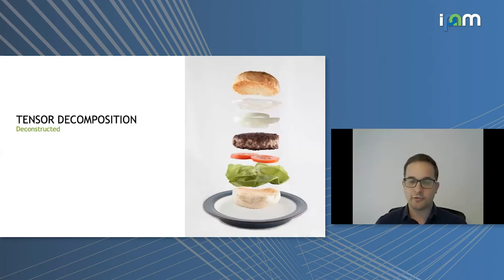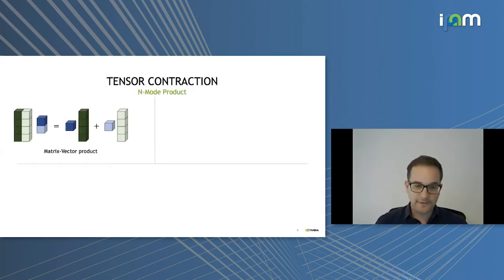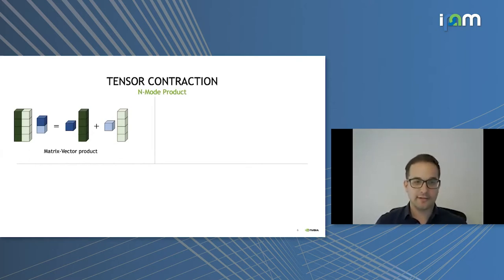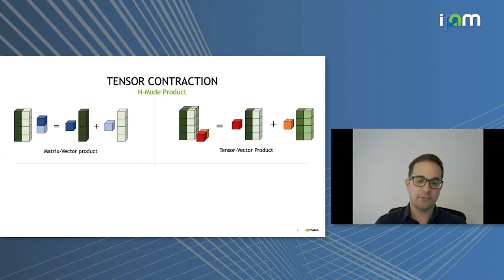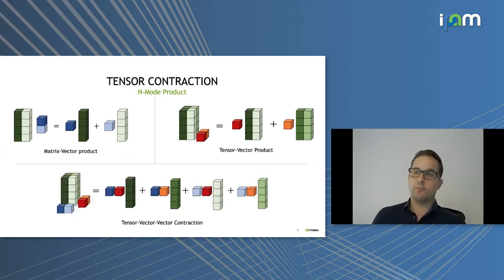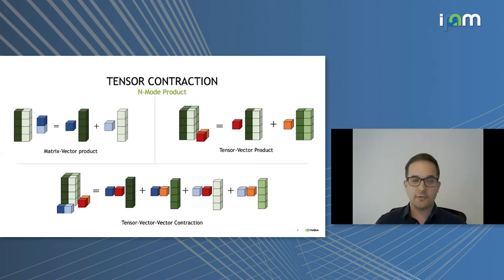A quick introduction to tensor decompositions: the core operation of tensor methods is tensor contraction, which generalizes matrix-matrix or matrix-vector products. If we contract a matrix with a vector, we take a linear combination of its columns and contract over one dimension, resulting in a vector. The same can be done for tensors — the n-mode product contracts a tensor with a matrix or vector along its n-th mode or dimension, resulting in a linear combination of the slices. We can also contract a tensor with two or more matrices or vectors, giving a multilinear combination of the fibers that compose the tensor.